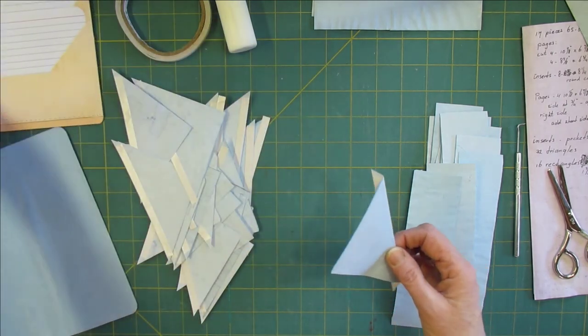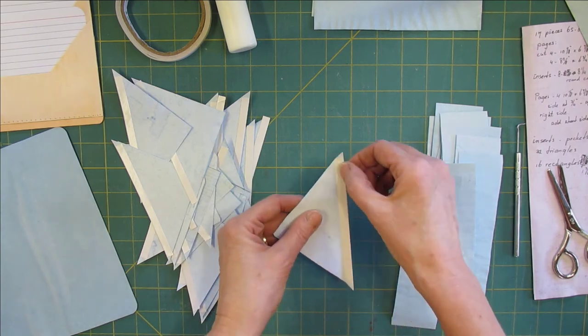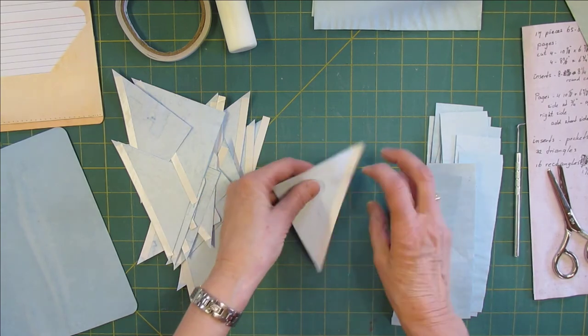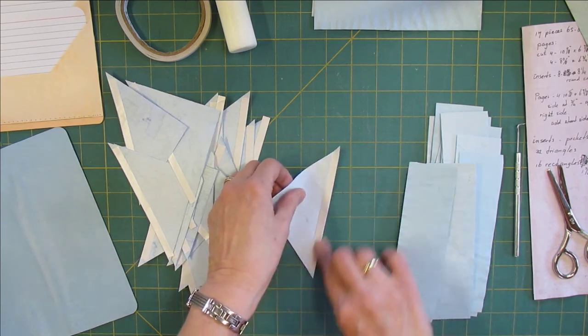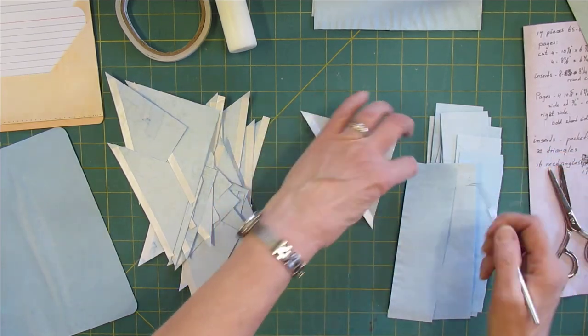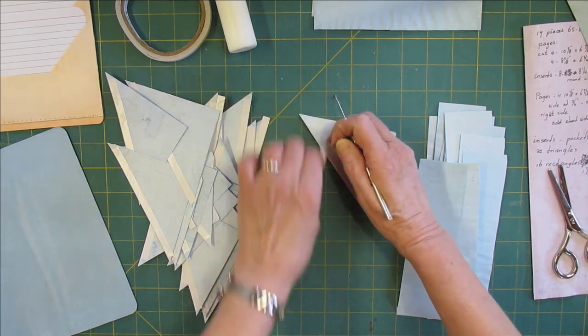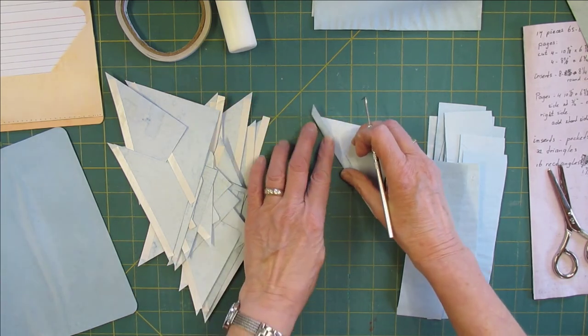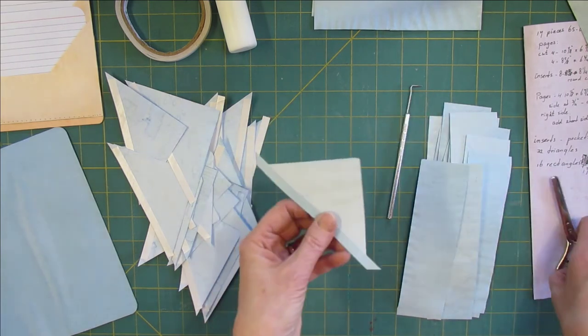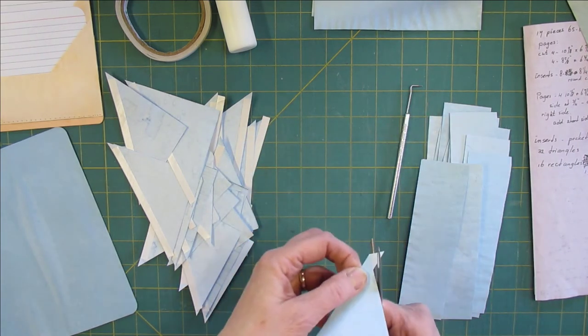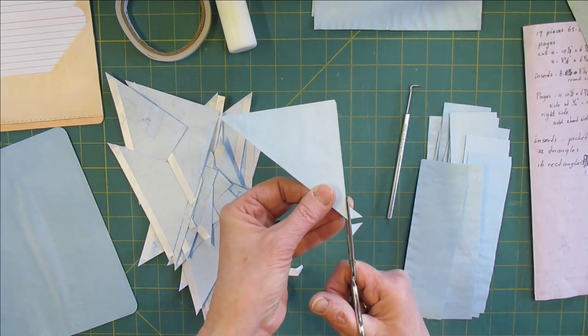You can also score this at 3/8 of an inch, fold over and then apply glue to the 3/8 of an inch. I'm using double-sided tape so my tape acts as a folding line. My tape is between 1/4 and 3/8 of an inch wide. After that you're going to cut off those little triangles.